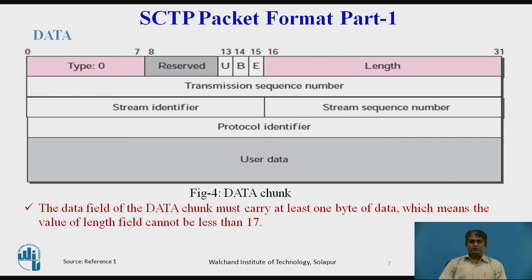When B equals 1 and E equals 1, there is no fragmentation. When B equals 1 and E equals 0, it is the first fragment. When B equals 0 and E equals 1, it is the last fragment. Note that the value of the length field does not include padding, and this value cannot be less than 17, because a data chunk must always carry at least one byte of data.